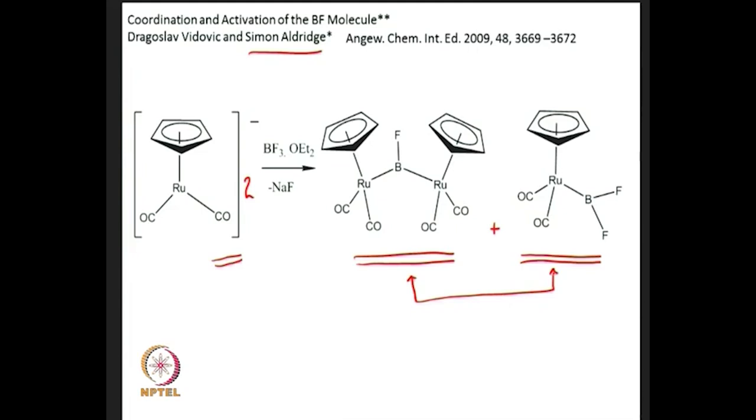This brings us to the end of today's discussion on alternatives to carbon monoxide. Carbon monoxide can be replaced by various other heteronuclear diatomics. Some, like NO⁺, are extremely similar to carbon monoxide and can be found in bridging, linear terminal, and bent forms, giving us some very interesting chemistry indeed.